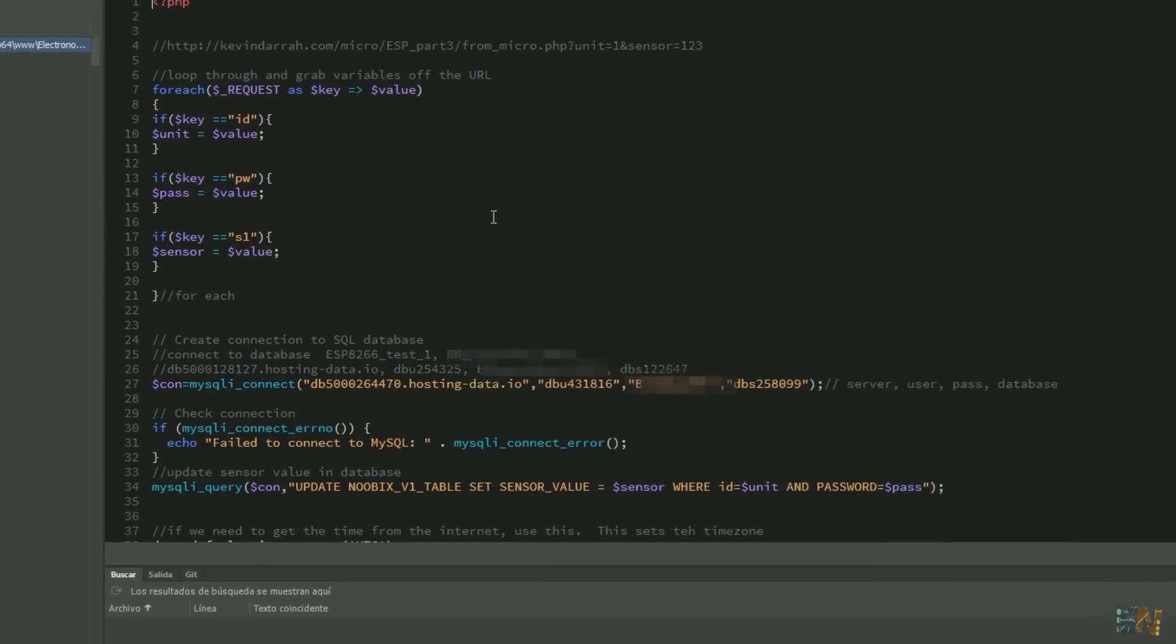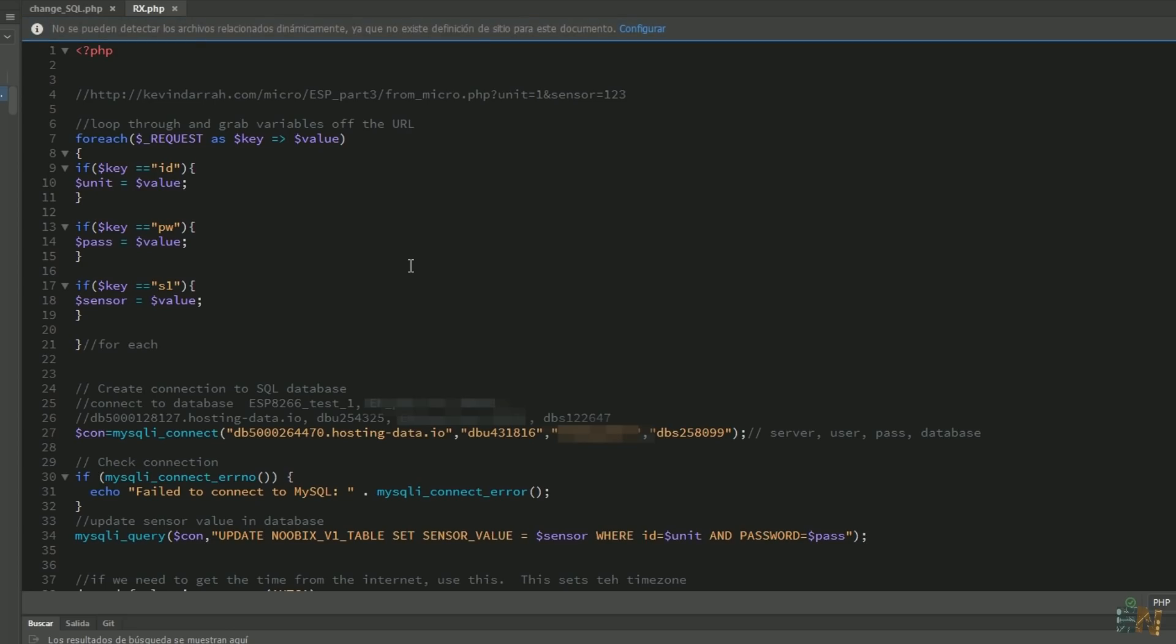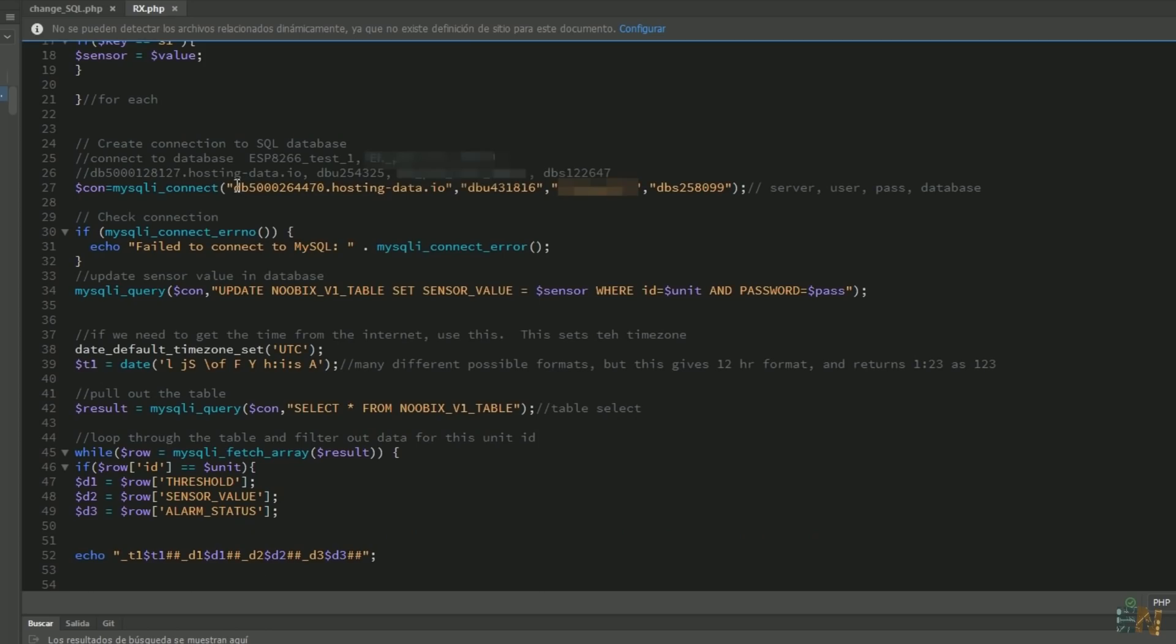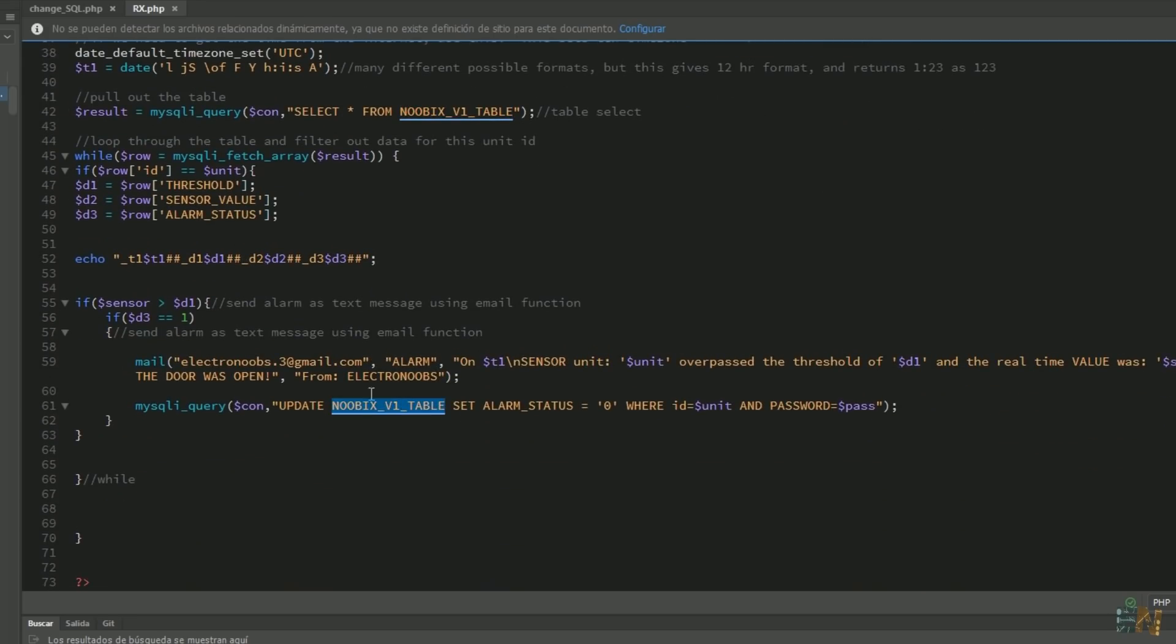Now go and open the rx.php and do the same. Change here the database values. Now change the table name here, here, and here. Or if you want it to be easier, just use the same name for the table as I did. You should also change this email address with your email address on this line here. Now save the file.